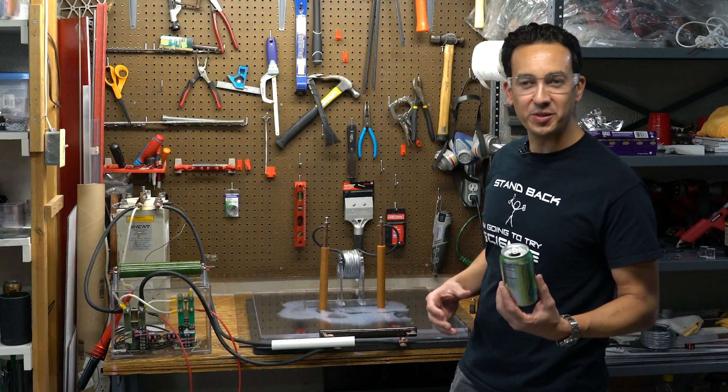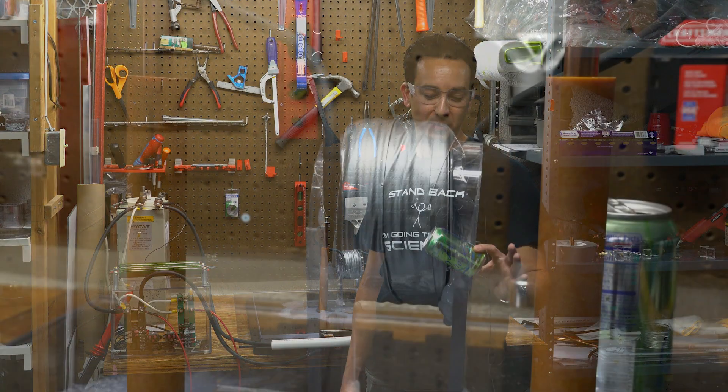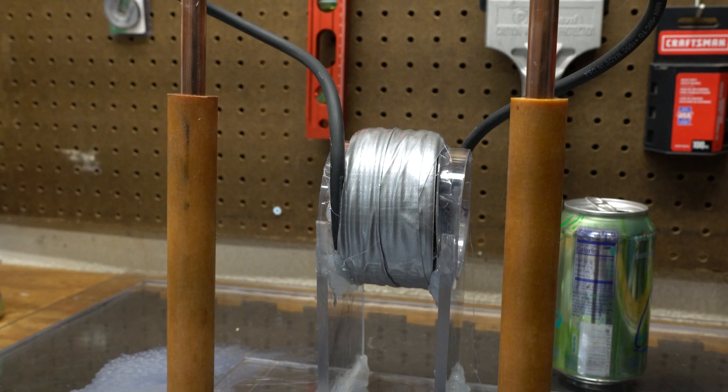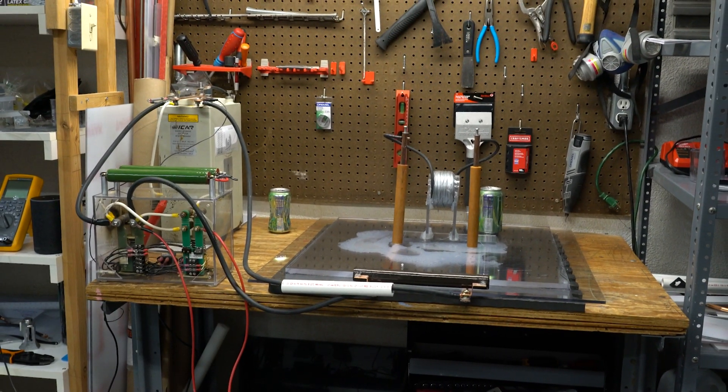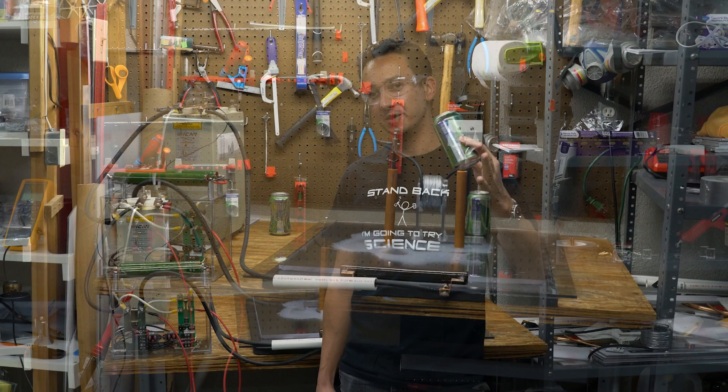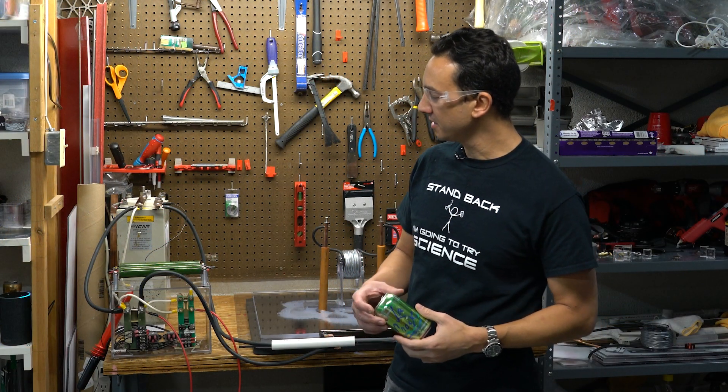One of my favorite things to do with pulse electrical power is magnetic metal forming. I'm going to illustrate that by applying a very strong magnetic field to this can and we're going to see what happens. Alexa, arm the relay.